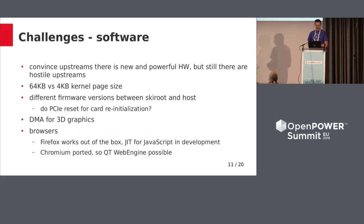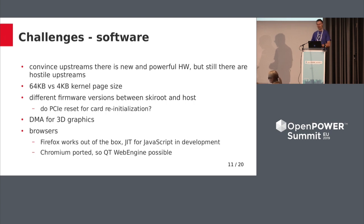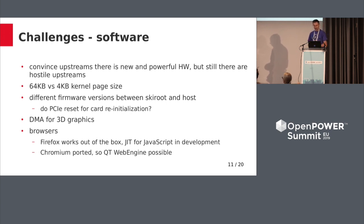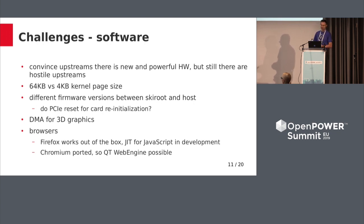The browser is the main application most people use these days — almost everything runs there. Firefox runs out of the box, though it's not as fast as it could be because the just-in-time compiler for JavaScript is not yet available on Power, but work is in progress. Chromium has been ported and its patches are slowly being merged upstream. There's also the Qt WebEngine, a library based on Chromium used in many desktop applications for displaying content. Some distributions already use Chromium bits in their web engine packages, and we're still working on having that available in Fedora.